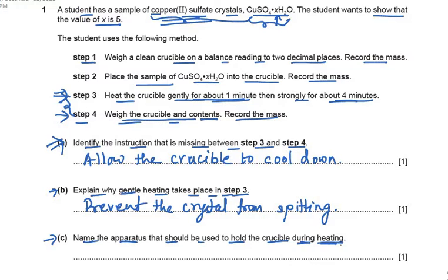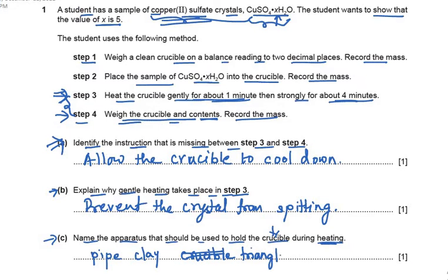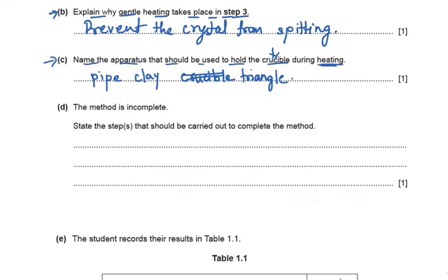Part C: name the apparatus that should be used to hold the crucible during heating. During heating, if we are placing the crucible on a burner, it is the pipe clay triangle which holds the crucible on the stand above the burner flame. So it is the pipe clay triangle. Those are the answers for parts A, B, and C.